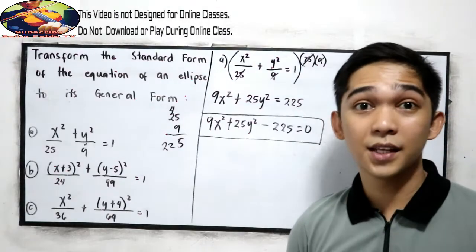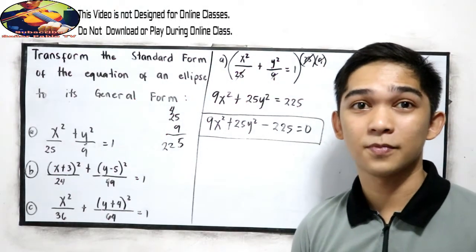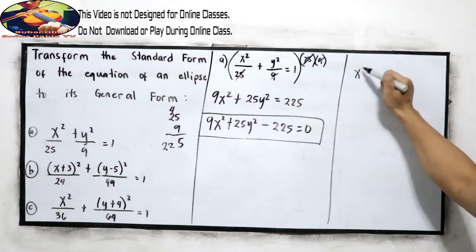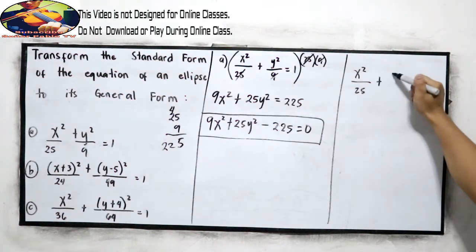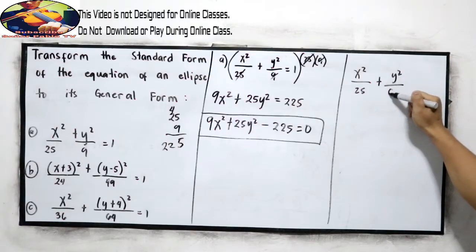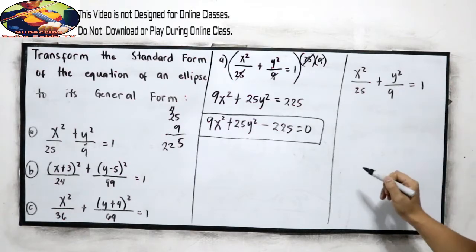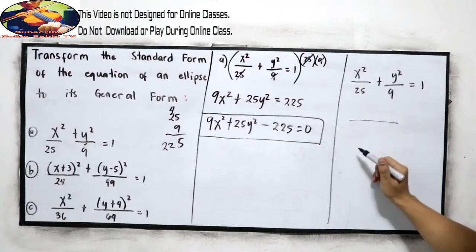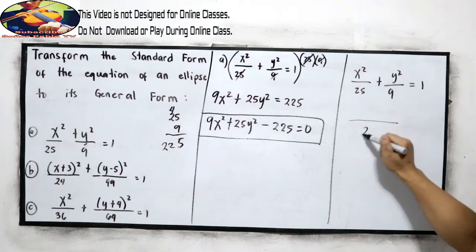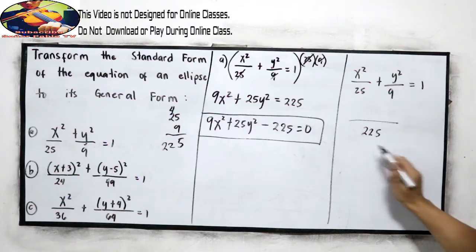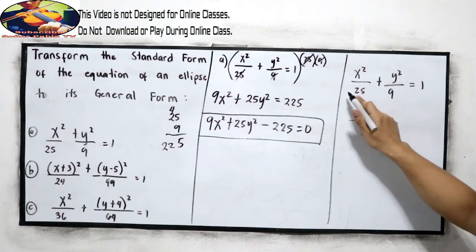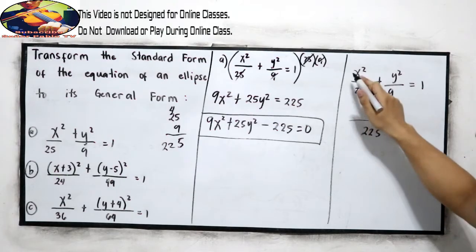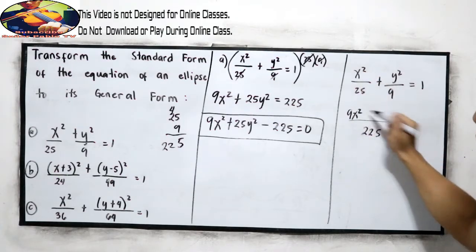The other way around is getting the LCD. So x squared over 25 plus y squared over 9 is equal to 1. Getting the LCD, 25 times 9, that is 225. 225 divided by 25, that is 9. 9 times x squared, so we have 9x squared.